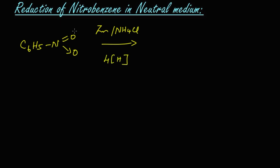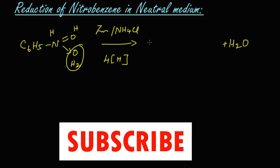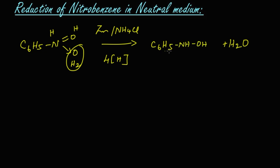Two hydrogen atoms and this oxygen will leave as a water molecule (H2O). The remaining two hydrogen atoms: one hydrogen gets attached to the nitrogen and another hydrogen to the oxygen. So we get C6H5-NH-OH, which is known as phenyl hydroxylamine.